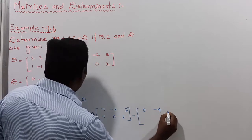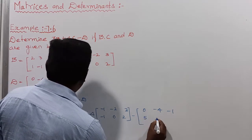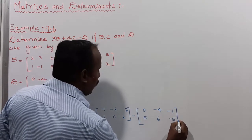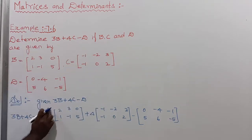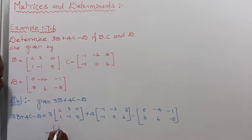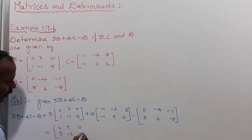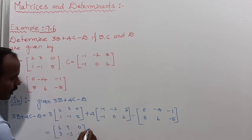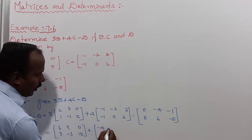D values: minus 4, minus 1, next 5, 6, minus 5. So 3 times B gives us: 6, 9, 0, 3, minus 3, 15. Next, 4 times C gives: minus 4, minus 8, 12, minus 4, 0, 8.